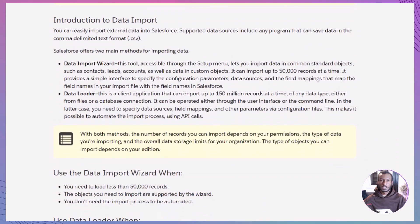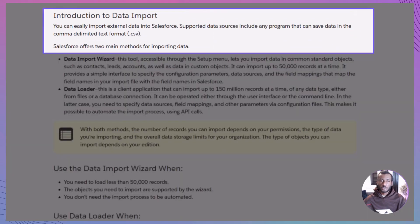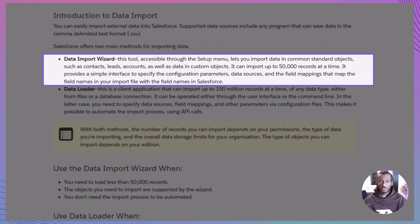Let's start with the basics. Salesforce makes it pretty straightforward to bring in external data, as long as you can save it in a comma-delimited format — that's your standard .csv file. There are two main tools to do this. First, the Data Import Wizard. You can access this right from the setup menu, and it works with common standard objects like accounts, contacts, leads, solutions, campaign members, and also custom objects. The wizard can import up to 50,000 records at a time. It's designed with a friendly interface that helps you configure options, upload your file, and map your fields step-by-step.